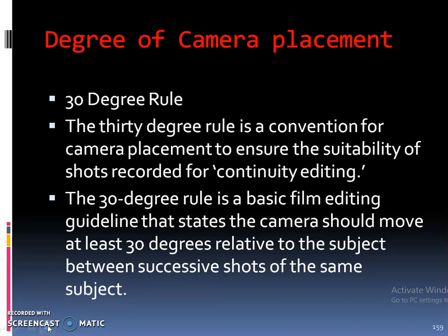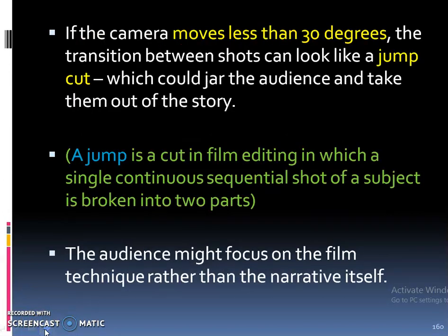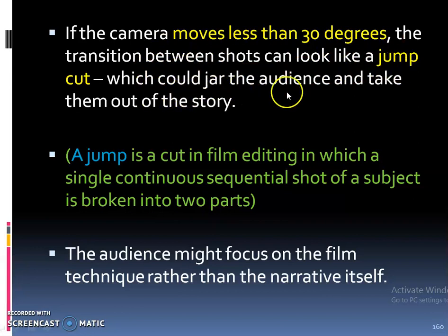Changes in image size can be shot in two ways. The camera moves directly towards the actor without any change of camera angles, which will facilitate continuity editing and will not affect any shift in the frame. If the camera moves less than 30 degrees, the transition between shots can look like a jump cut — a cut which could jar the audience and take them out of the story.